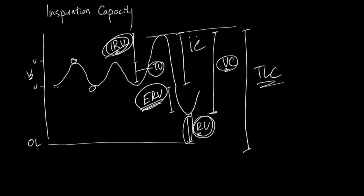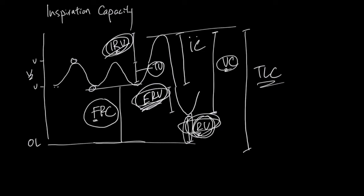If you add ERV to RV, that gives you everything from the normal minimum all the way down to zero. That is the functional residual capacity. This represents the amount of air that can physically be squeezed out after you breathe out.